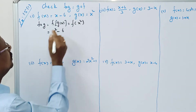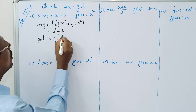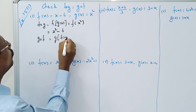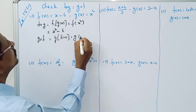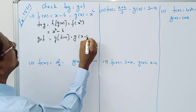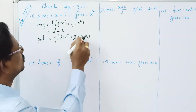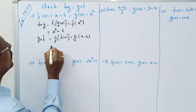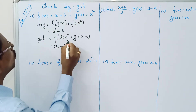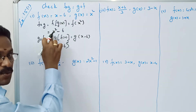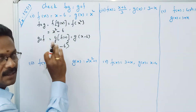Now G composition F — that is G of F of X — is equal to G of X minus 6. So G of X squared equals X minus 6, the whole square. Here it is X squared minus 6, and here X minus 6 the whole square. Not equal.